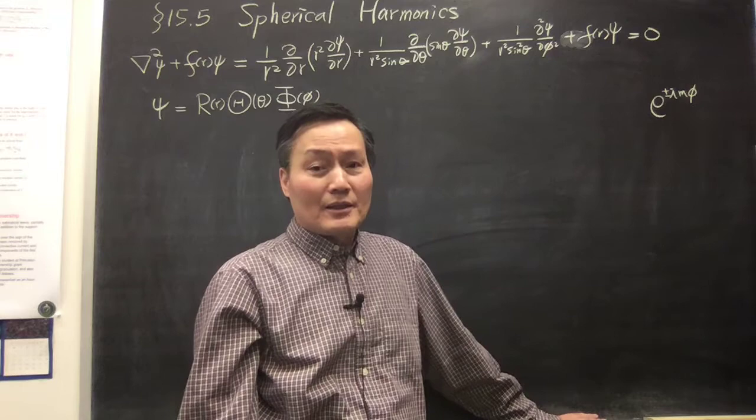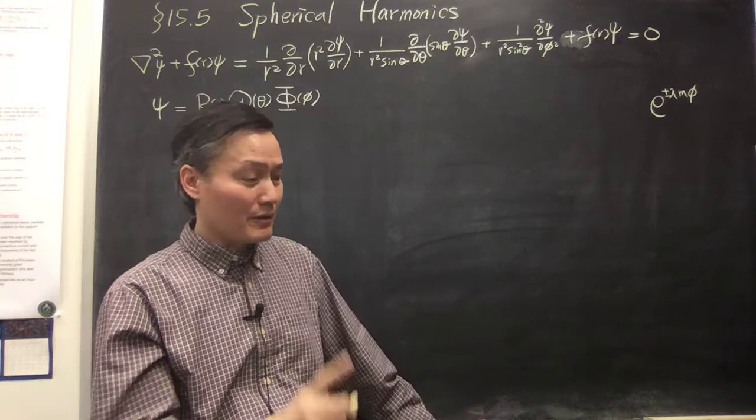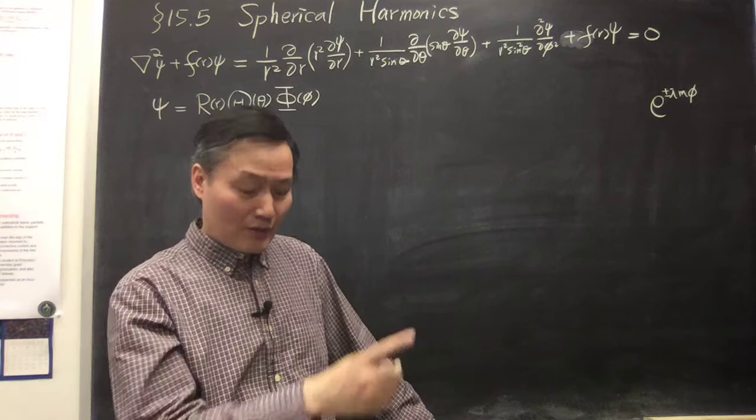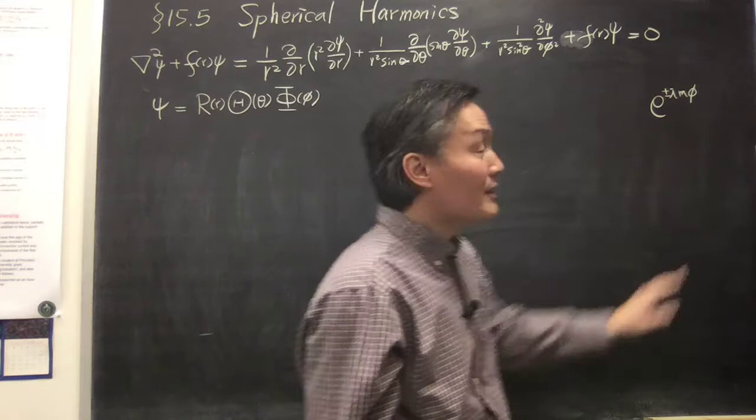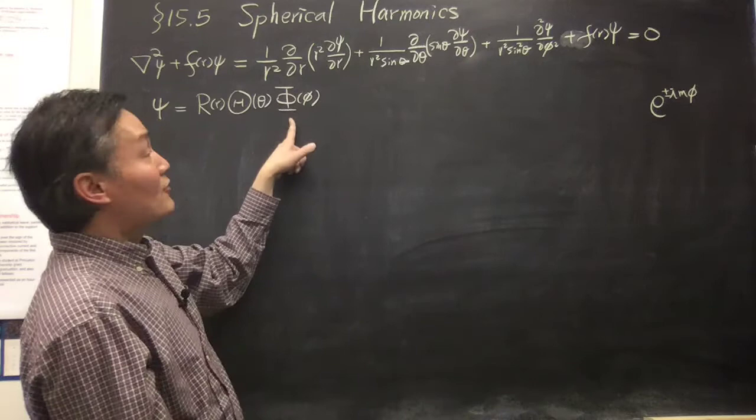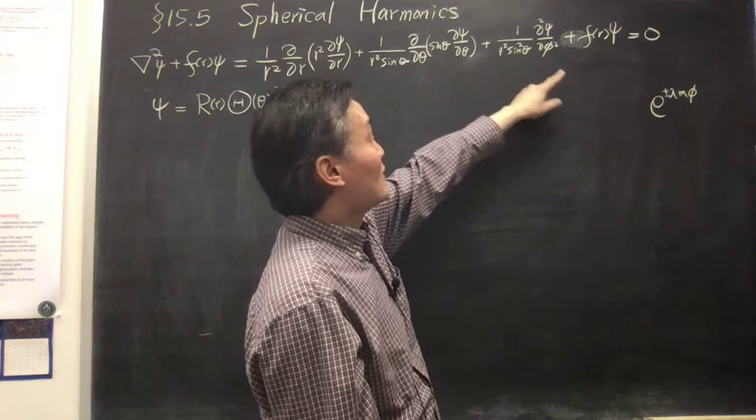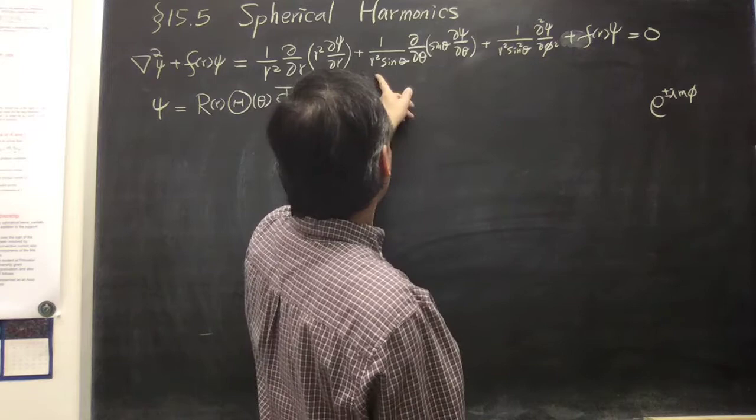This is because going around phi from 0 to 2π, you must satisfy the fact that this is a single-valued function, so you must have integer m. After substituting this into the theta equation, you pull out a negative m² in front. Combining with the theta function, you see that equation is of the form of the associated Legendre equation.